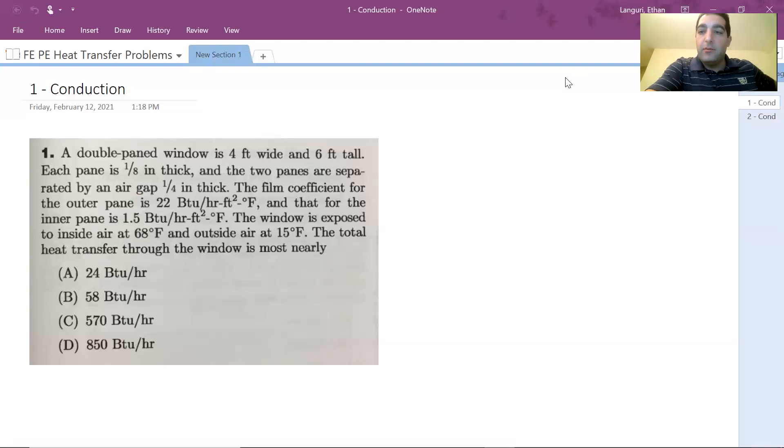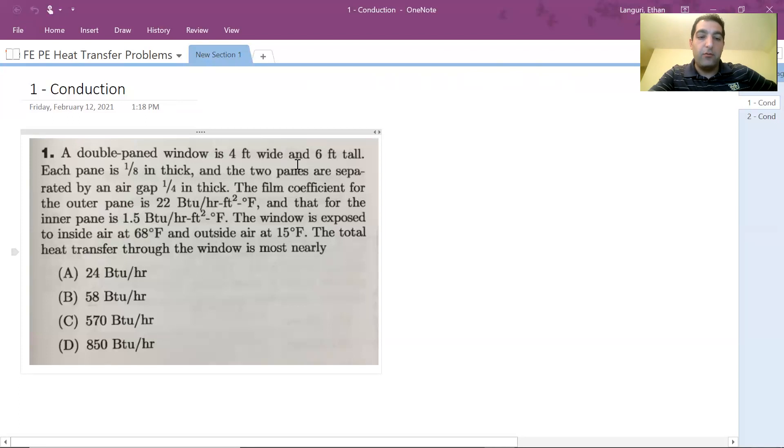So let's look at the problem. As you can see, it's a conduction problem. A double-pane window is 4 feet wide and 6 feet tall. Each pane is 1/8 inch thick, and the two panes are separated by an air gap 1/4 inch thick. The film coefficient for the outer pane is 22 BTU per hour foot squared Fahrenheit, and that for the inner pane is 1.5 BTU per hour foot squared Fahrenheit. The window is exposed to inside air at 68°F and outside air at 15°F. The total heat transfer through the window is most nearly one of the given values for BTU per hour.